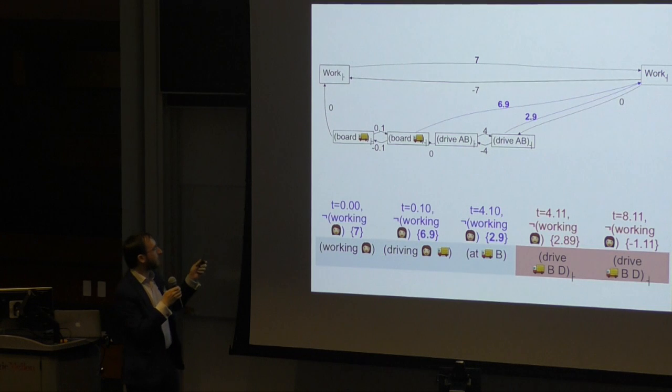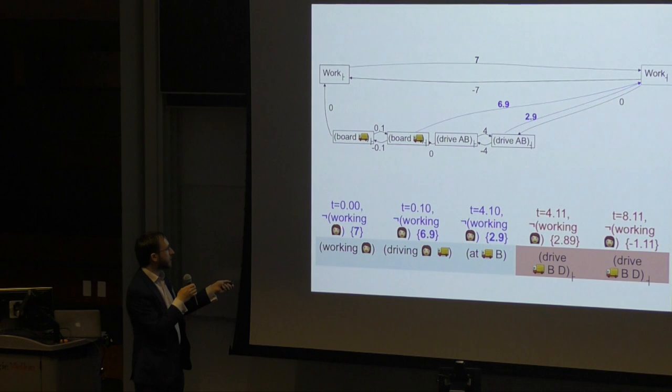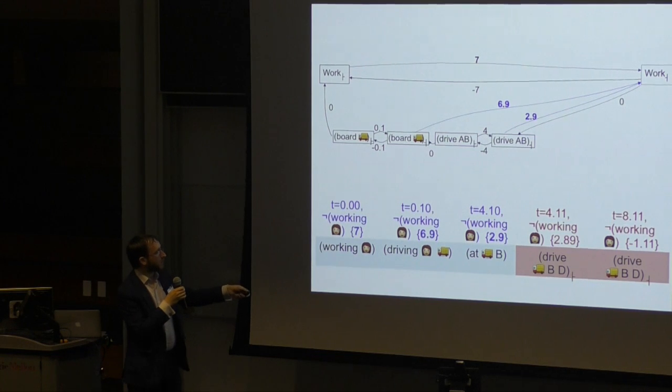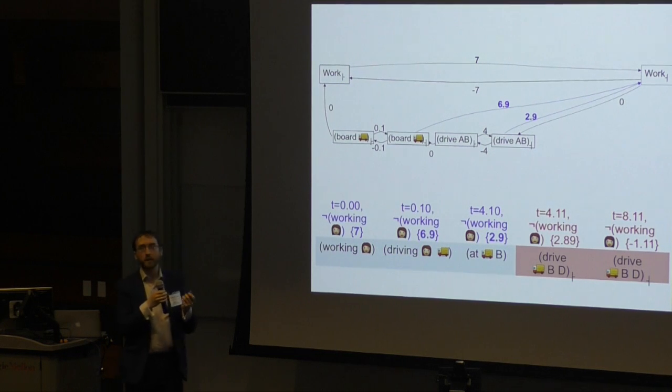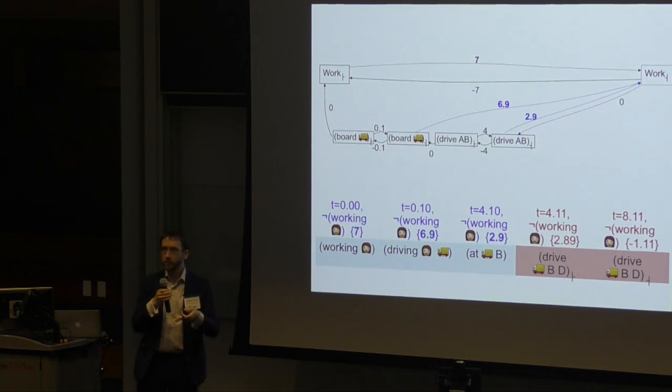This is a bit of a spoiler but this is what the output is going to be. So as we are expanding our planning graph, instead of our layers just being annotated by a timestamp, they also have this additional information that says at the point when you got the fact working you were 7 time units away from the fact working being deleted. When you got the fact driving you had 6.9 time units to go, when you got the fact at B you had 2.9 time units until that happens, and then you can propagate these figures throughout the planning graph until you get this useful thing here. By the time you get to the end of driving from B to D you have a negative amount of time until the fact working would have been deleted, which means actually that action couldn't have been applied because working was an overall condition that needed to be true throughout the action to drive from B to D.